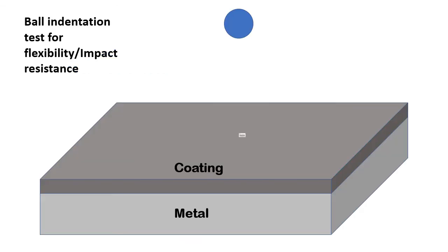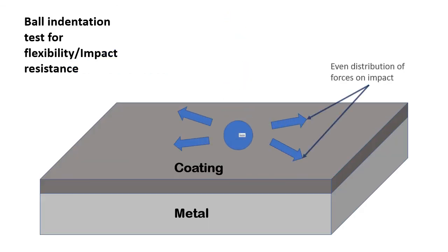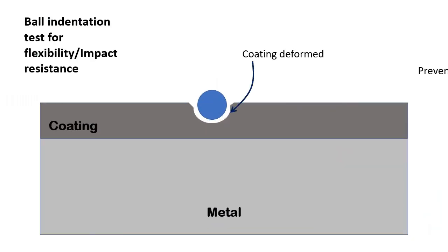This problem can be addressed by improving adhesion or increasing the flexibility of the coating. A flexible coating experiences much less overall stress, as it gets distributed evenly across the coating, thereby protecting the coating from disbonding from the substrate. However, care must be taken when increasing flexibility because it may reduce the barrier property of the coating.